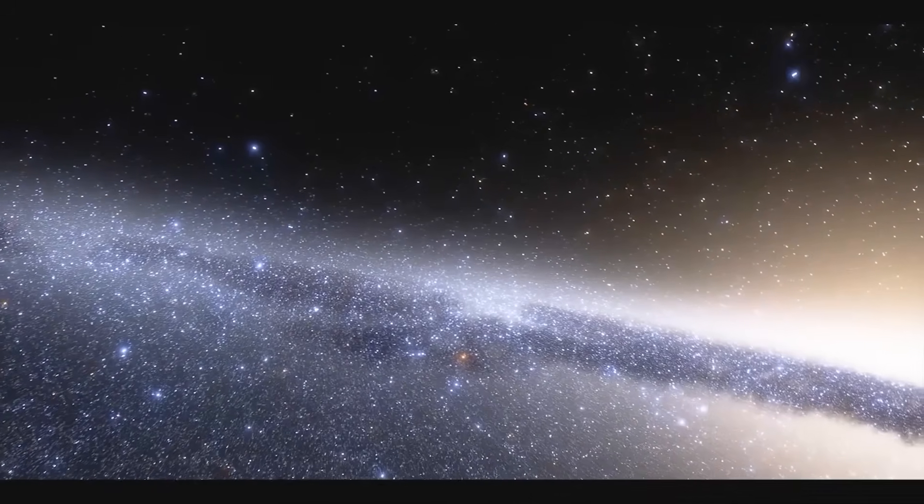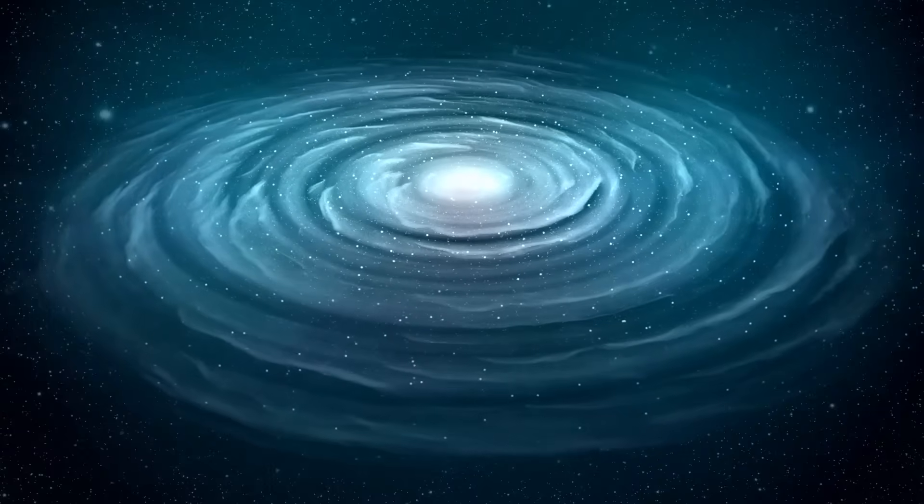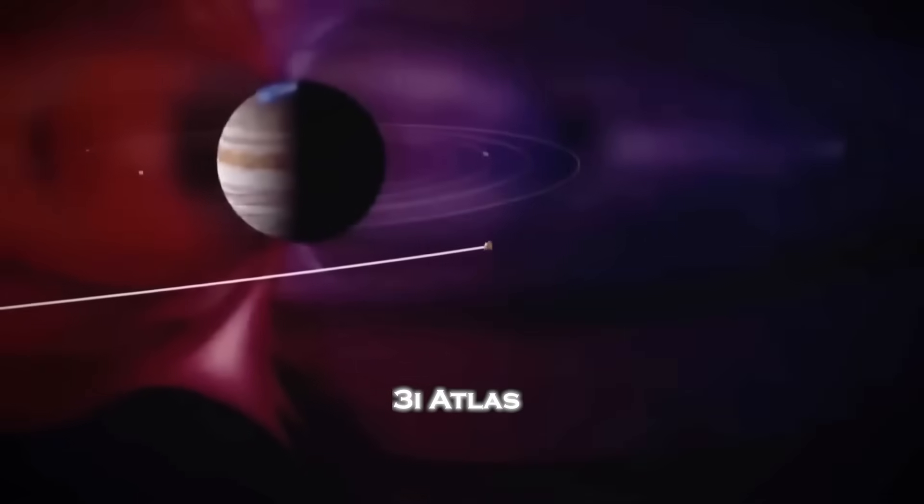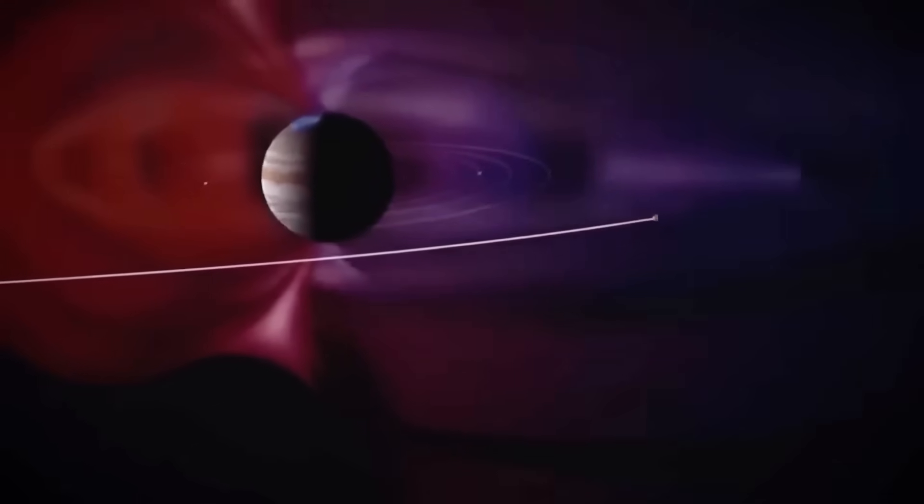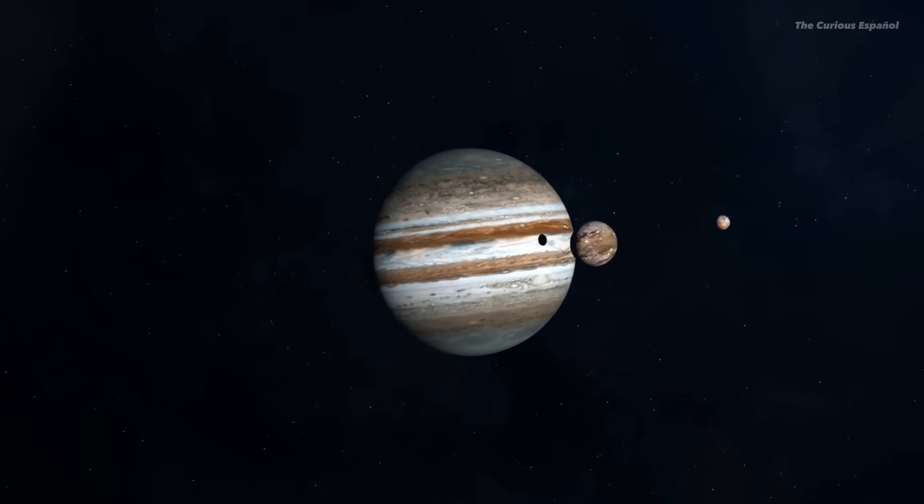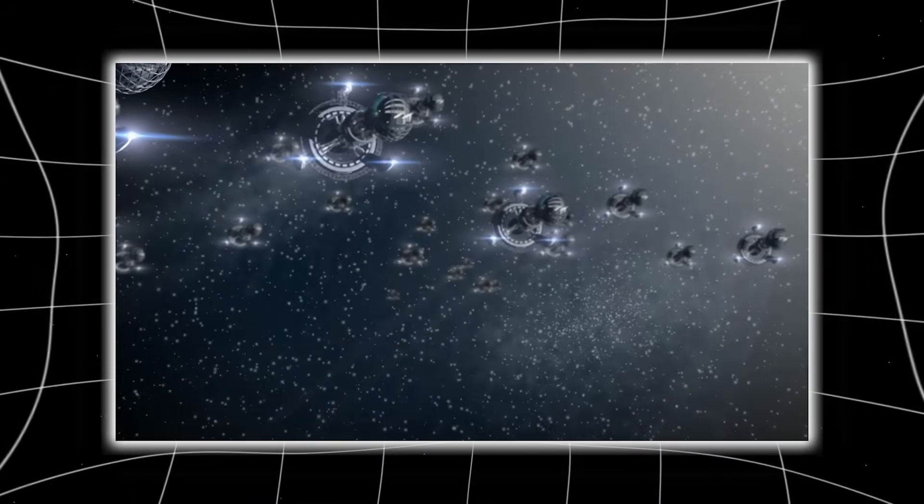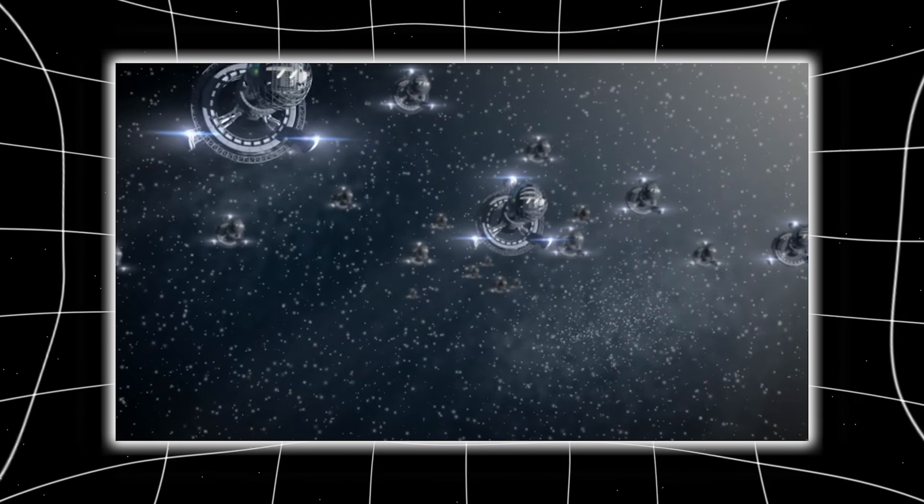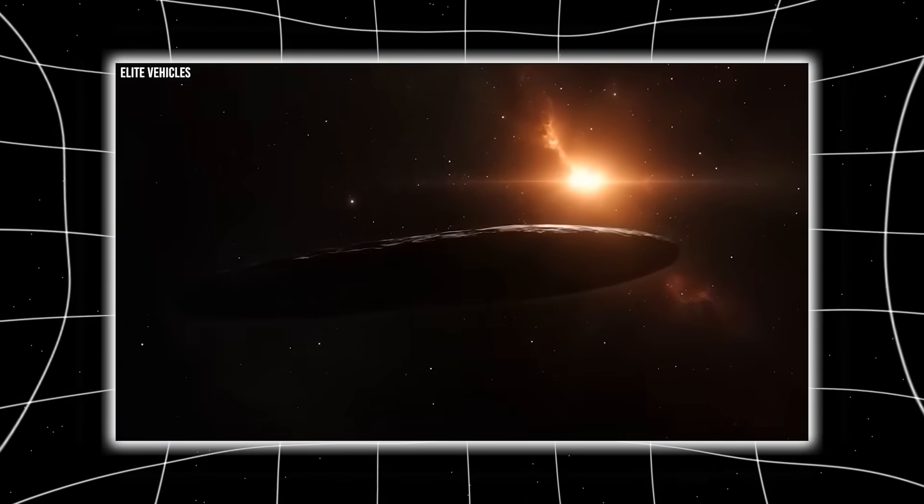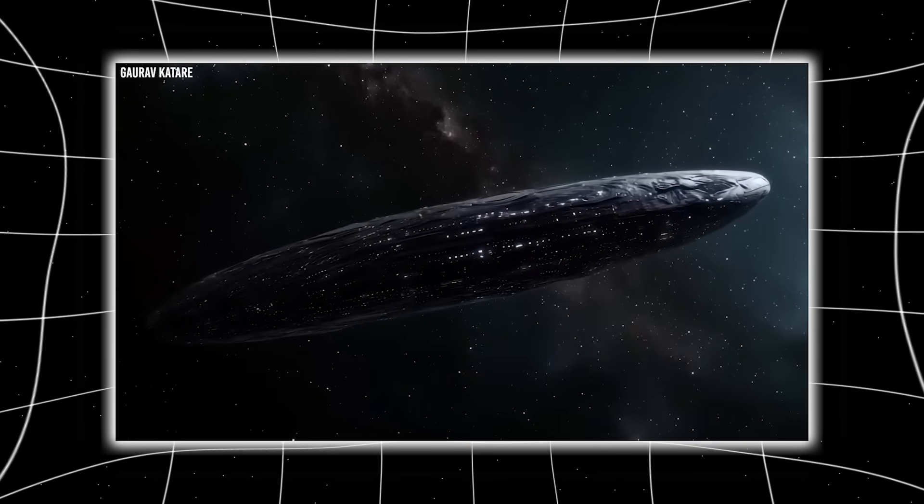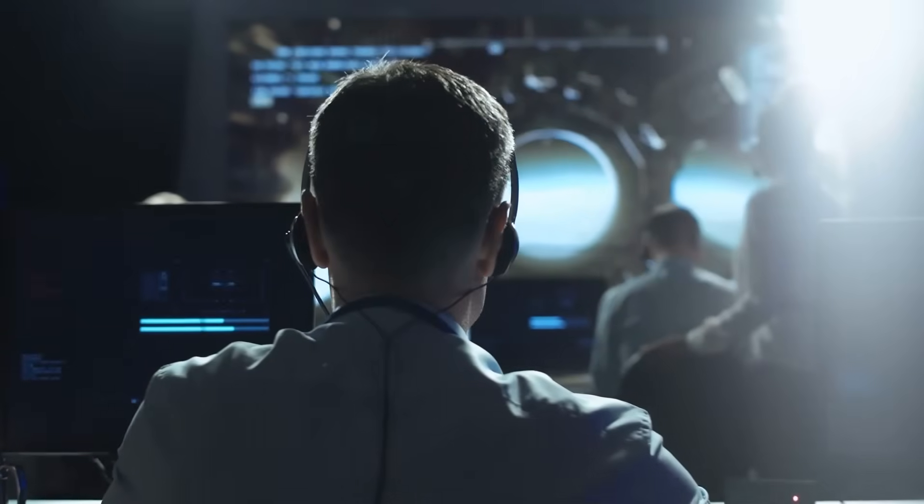Then comes the strangest coincidence yet, one that borders on impossible. On March 16, 2026, 3i Atlas will pass extraordinarily close to Jupiter at a distance nearly identical to Jupiter's hill radius, the gravitational boundary where Jupiter's influence overcomes the Sun's. This location is strategically ideal for placing orbiters or probes for long-term observation of the Jovian system. A natural comet accidentally intercepting this zone is already unlikely, but the match is so precise, so perfect, that Avi Loeb reached out to JPL for comment. NASA did not respond.